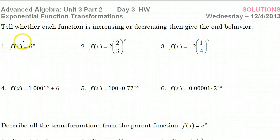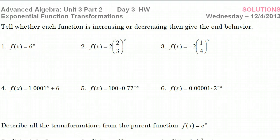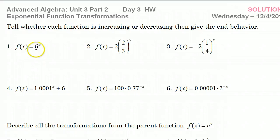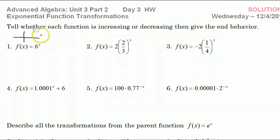For problem number one, I'm just asking if the function is increasing or decreasing and then give the end behavior. What I think would be best is to make a little sketch. Looking at the base — since the base is six, you know this is going to be increasing. I know the asymptote is zero because there's nothing being added on and it's increasing. So this is a tiny little sketch of what's happening.